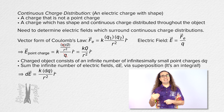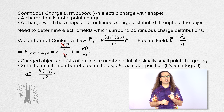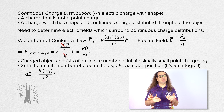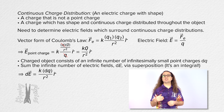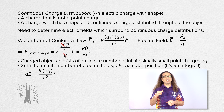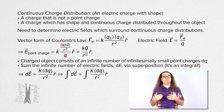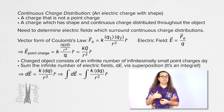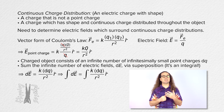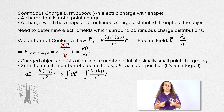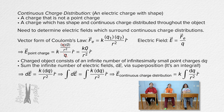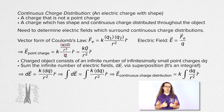We now know dE, the electric field caused by every infinitesimally small part of the continuous charge distribution dq, equals the Coulomb constant times dq divided by r squared times unit vector r. We can take the integral of both sides, which adds up the electric fields caused by the infinite number of infinitesimally small point charges dq, and we get the electric field caused by the continuous charge distribution equals the Coulomb constant times the integral of dq over r squared, all times unit vector r.